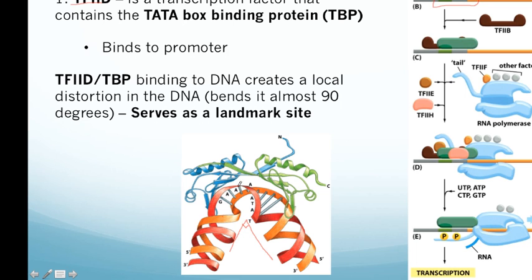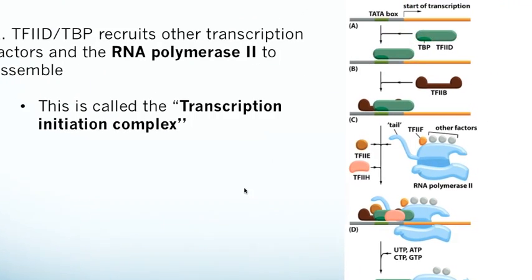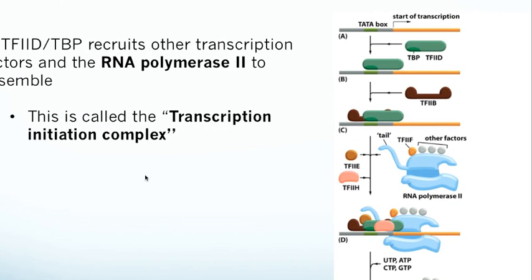TF2D and TBP will actually bend the DNA almost at a 90-degree angle. This causes a very sharp distortion of the double helix that serves as a recognition and landmark site for all the other general transcription factors. This initial step — TF2D-TBP binding to the promoter — is essentially required because without it, none of the other proteins necessary for transcription would recognize where they're supposed to bind. So TF2D-TBP bends the DNA 90 degrees and acts as a landmark site.